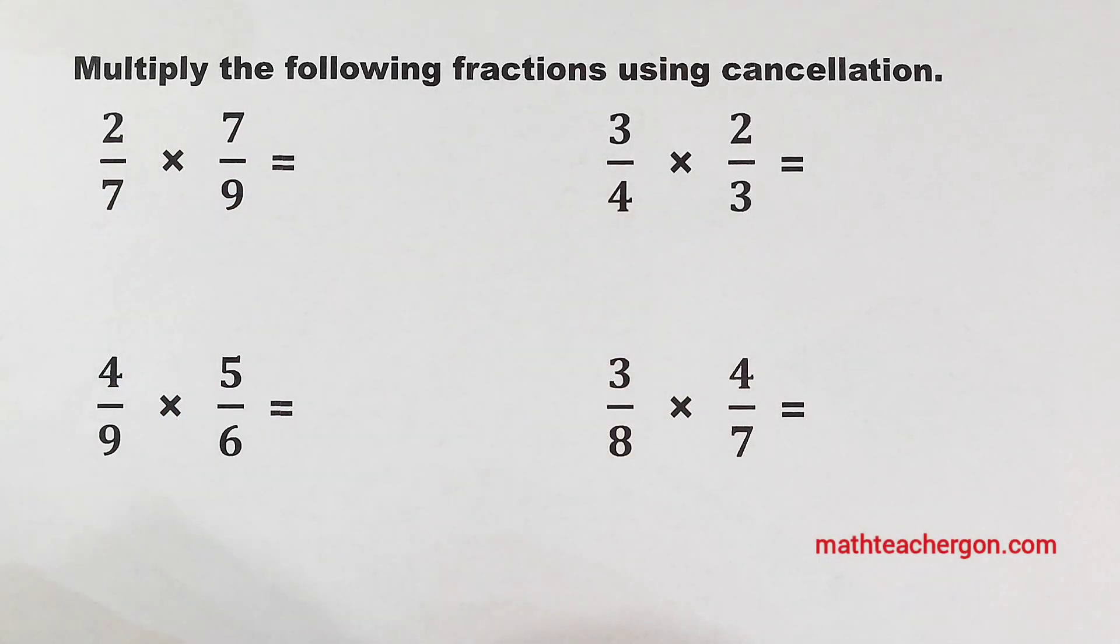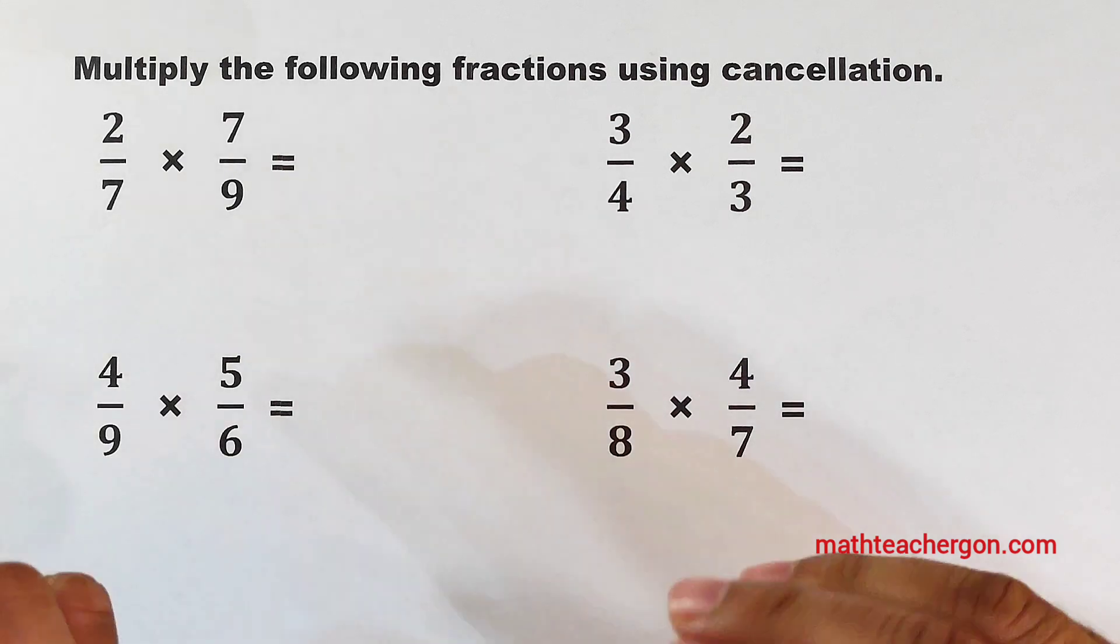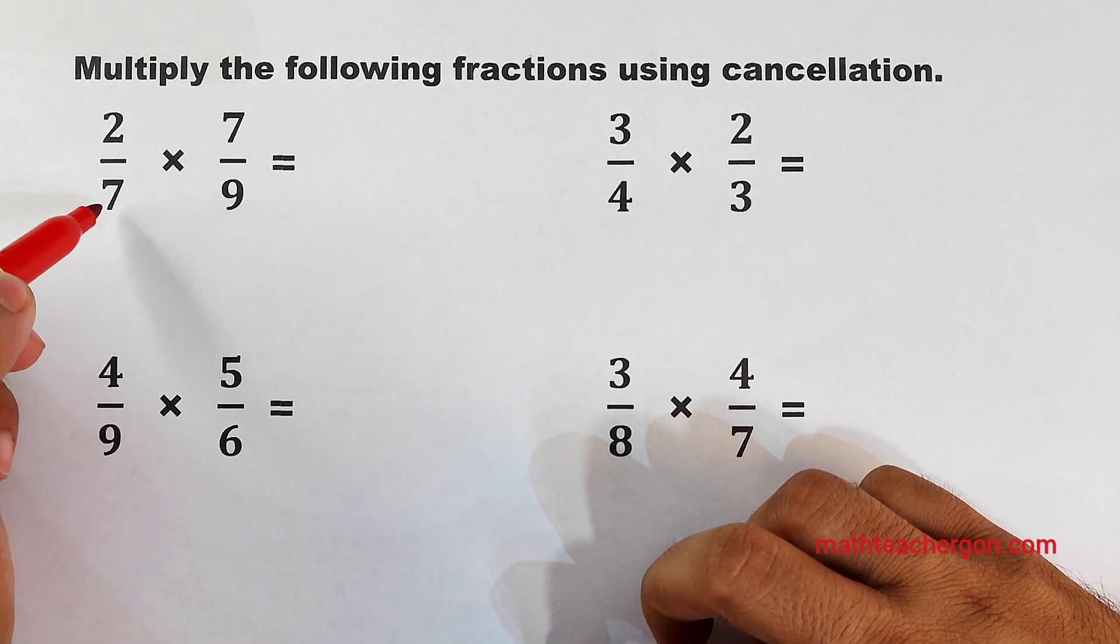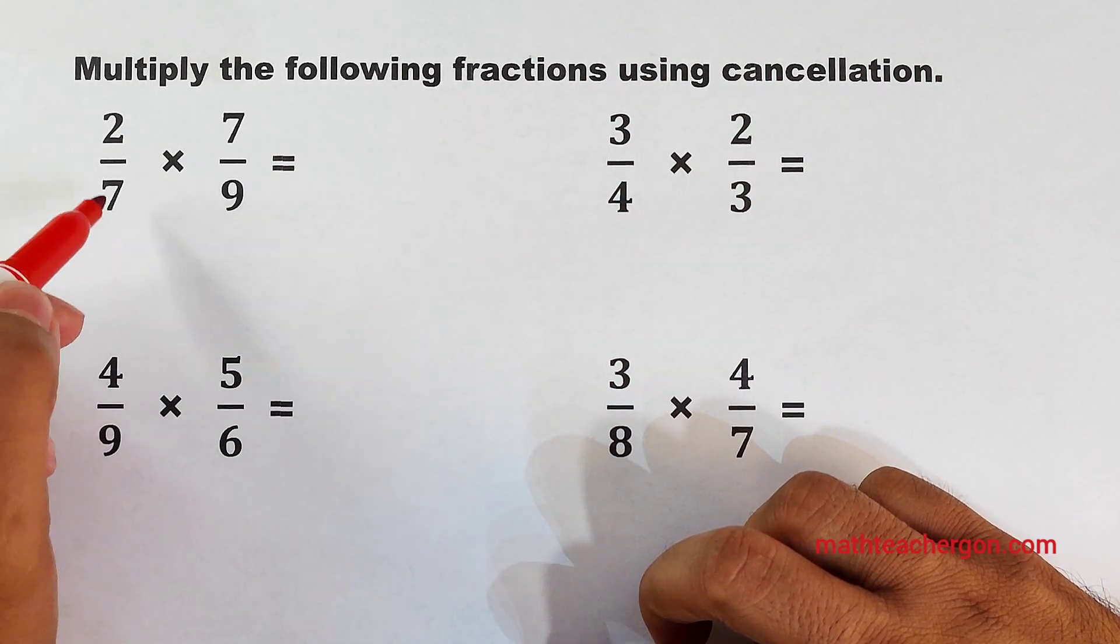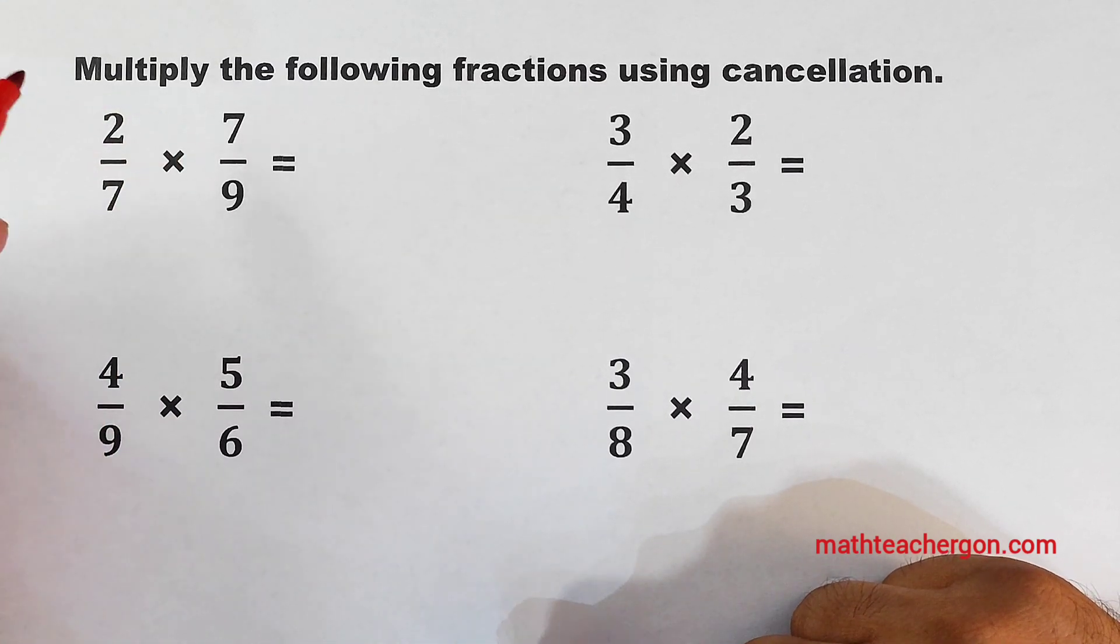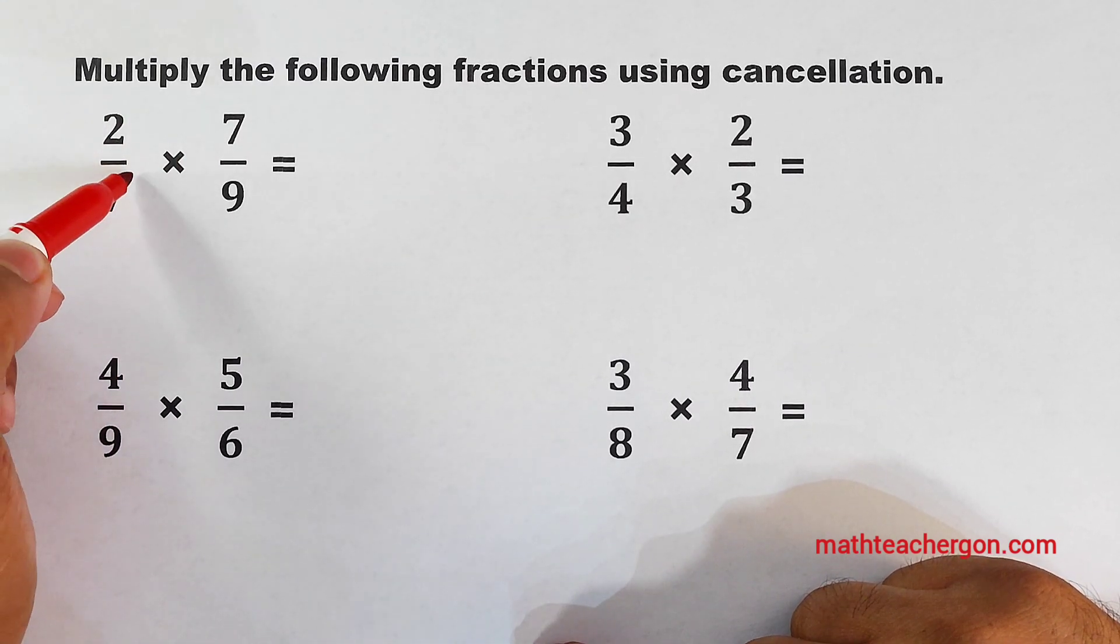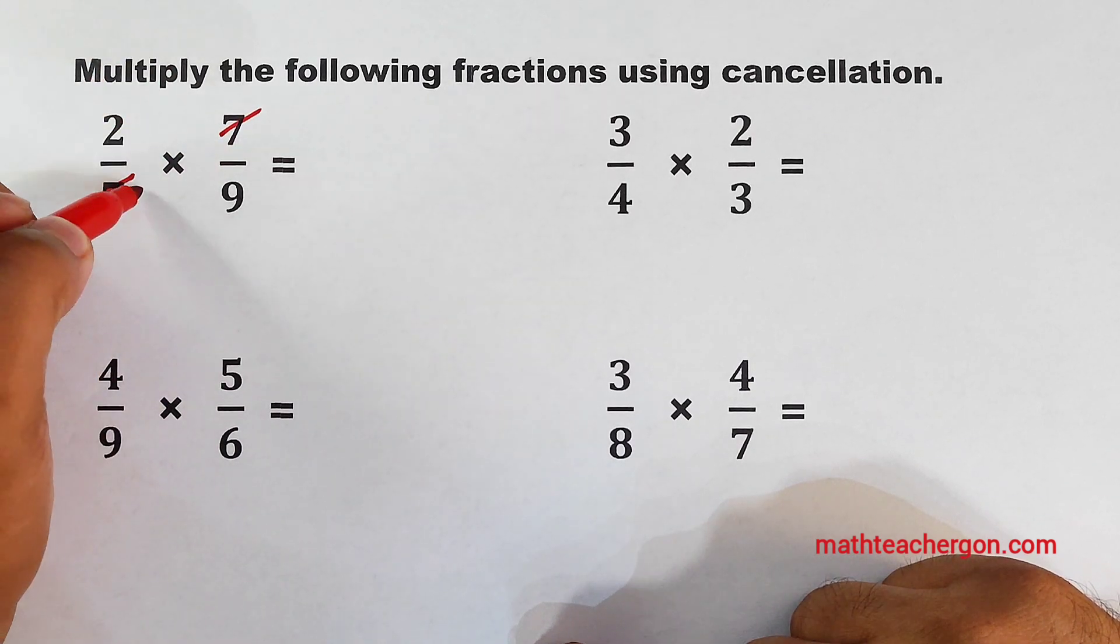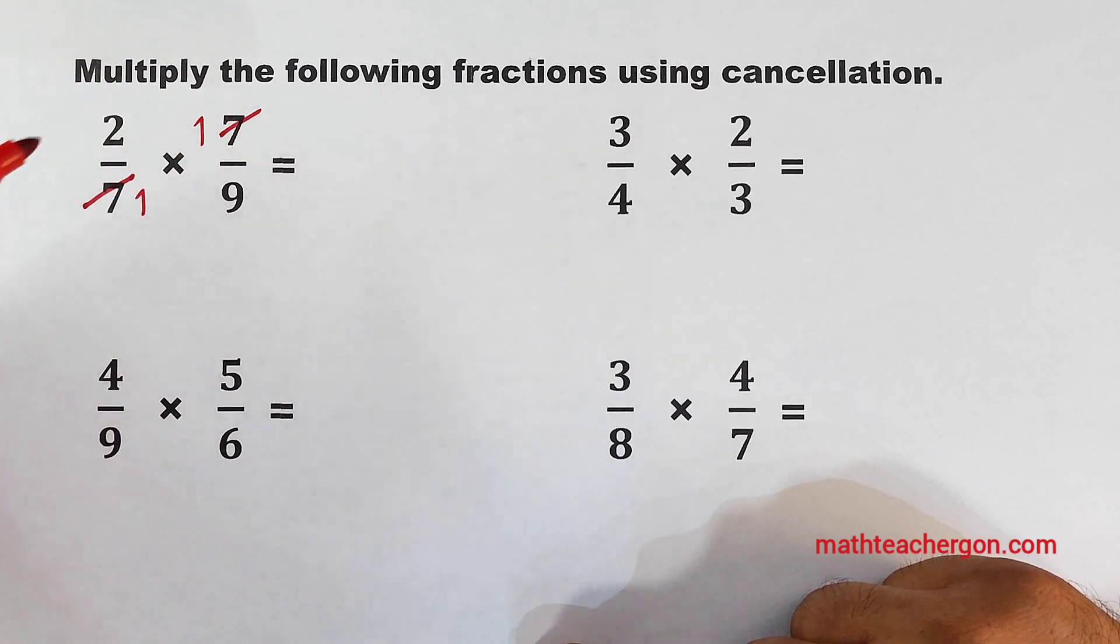So how do we cancel? As you can see, there are two common numbers here, which is 7 from the denominator of the first fraction and from the numerator of the second fraction. Since this is the case, we can cancel out this number and this number, it will become just 1 and 1.